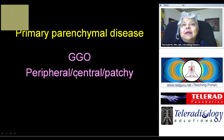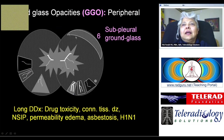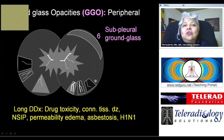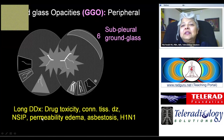Coming to primary parenchymal lung disease that leads to heterogeneity, we will discuss various causes of ground glass opacities. The opacities may be peripheral, central, patchy, and multifocal. Subpleural ground glass opacities are a very nonspecific finding seen in a host of conditions with a long differential: drug toxicity, connective tissue diseases, nonspecific idiopathic interstitial pneumonia, permeability pulmonary edema, asbestosis, and H1N1 viral pneumonia.